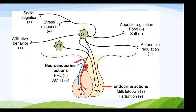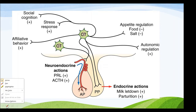There are different factors which affect oxytocin release. Social cognition has a positive effect, stress response also has a positive effect, and affiliative behavior is also a positive effect on oxytocin release.